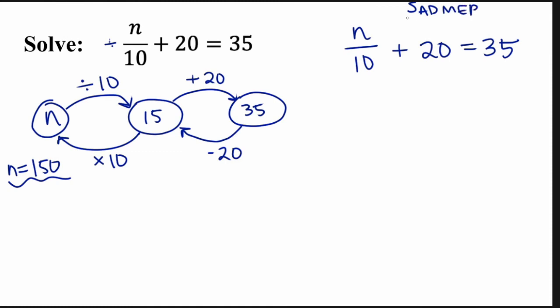I'm going to use SADMEP. So I'm going to try to do subtraction or addition first. I'm going to undo this addition here by subtracting 20, both sides. And I'm left with N over 10 equals 15. Then this is just division over here. And I'm going to multiply to undo it. So N equals 150. When in doubt, use whatever method you like. But I want you to get comfortable with using both.